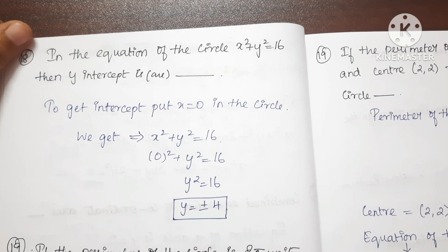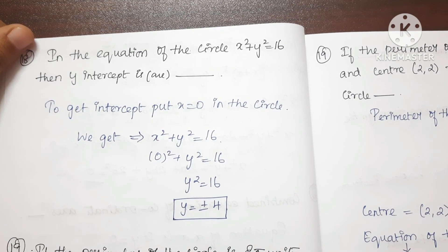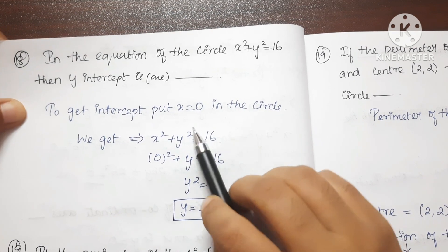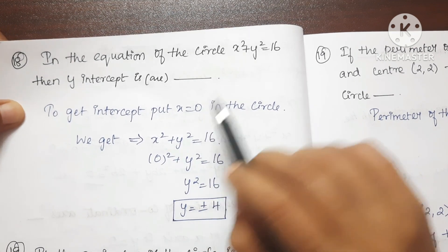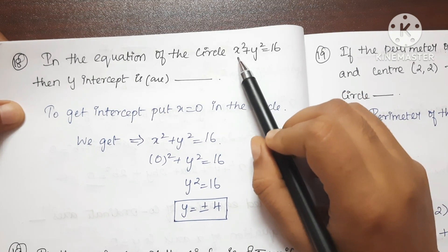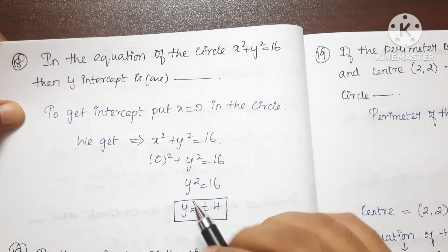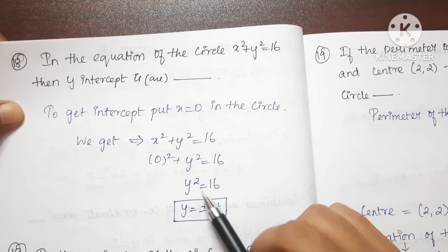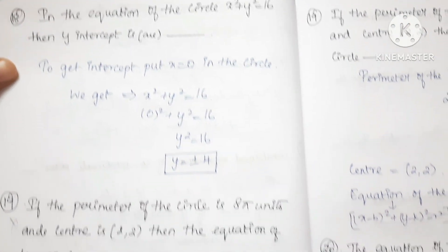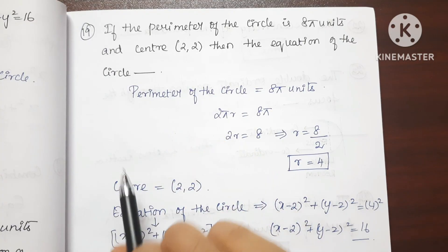Question 18: If the equation of a circle is x²+y²=16, find the y-intercept. To get the y-intercept, put x=0 in the equation. Then y²=16, so y=±4.